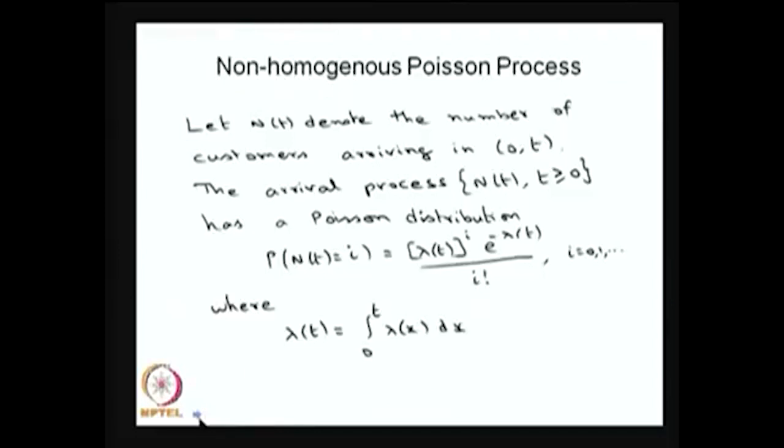This stochastic process is called a non-homogeneous Poisson process. Instead of the mean arrival rate being a constant, here lambda(t) is a function of t, and therefore this stochastic process is called a non-homogeneous Poisson process.